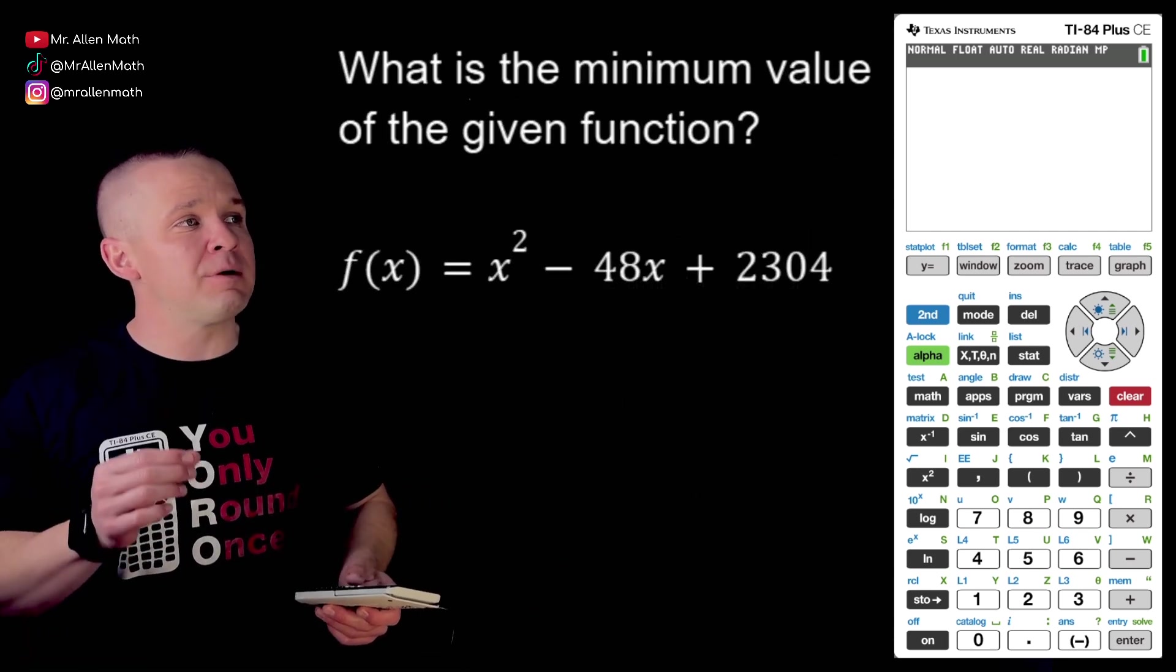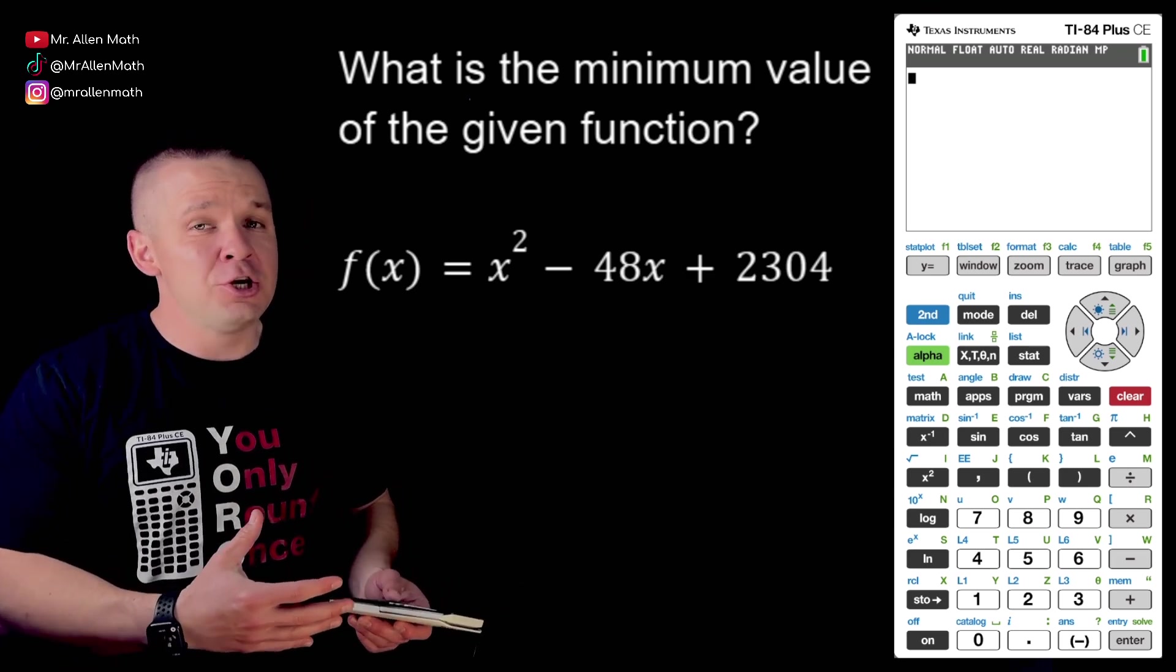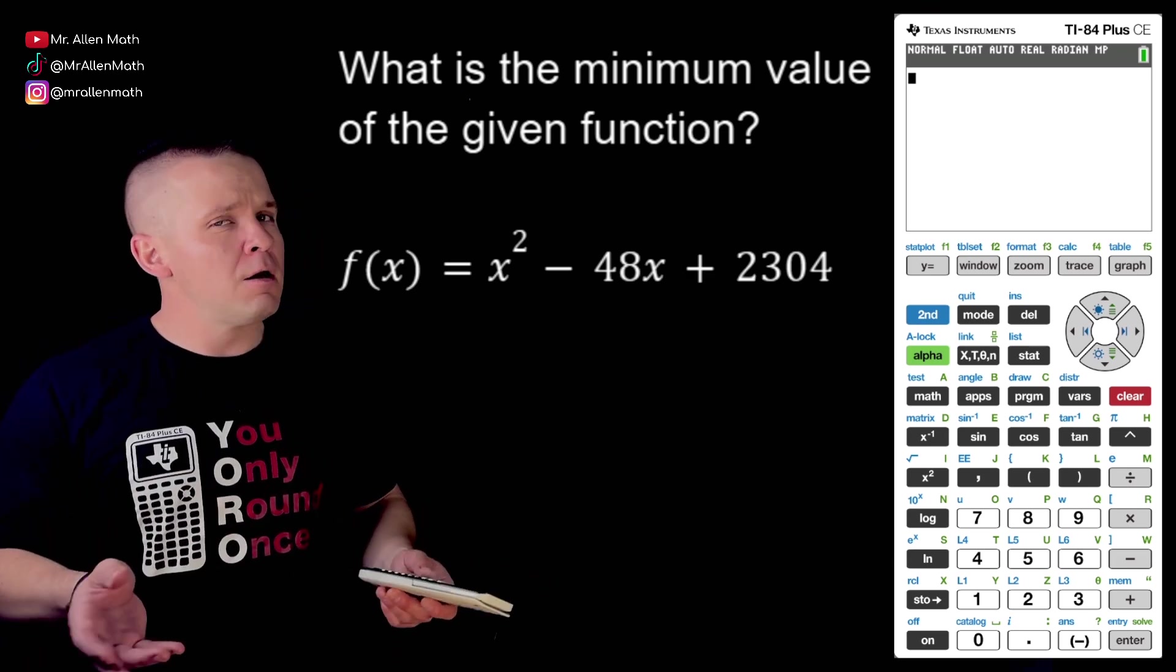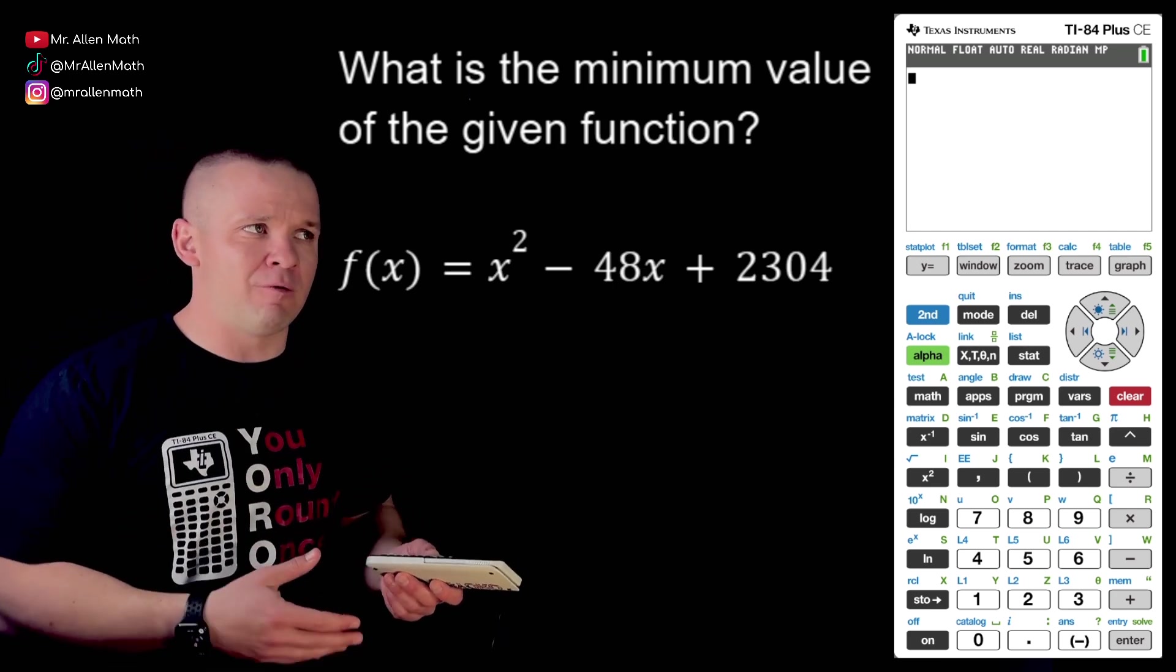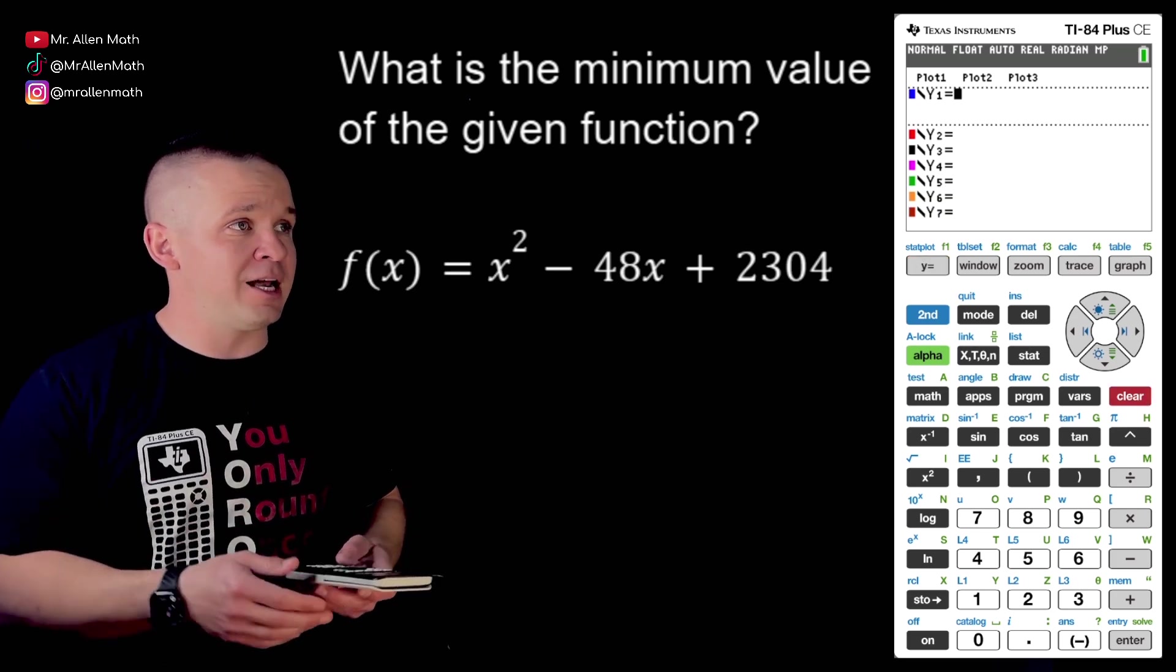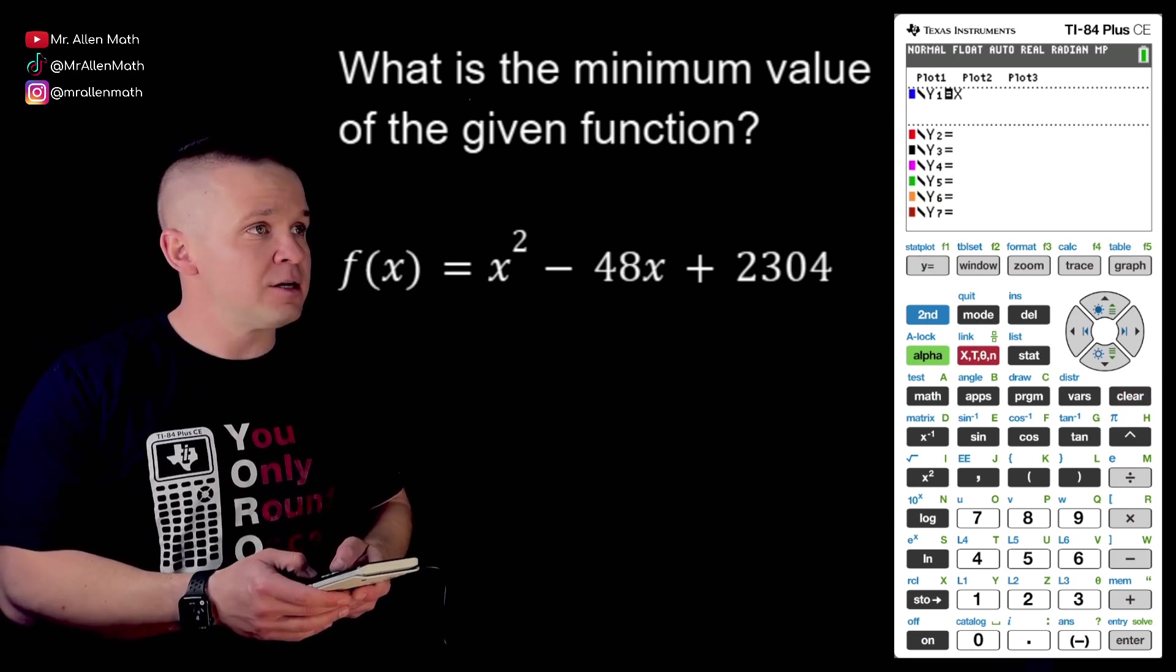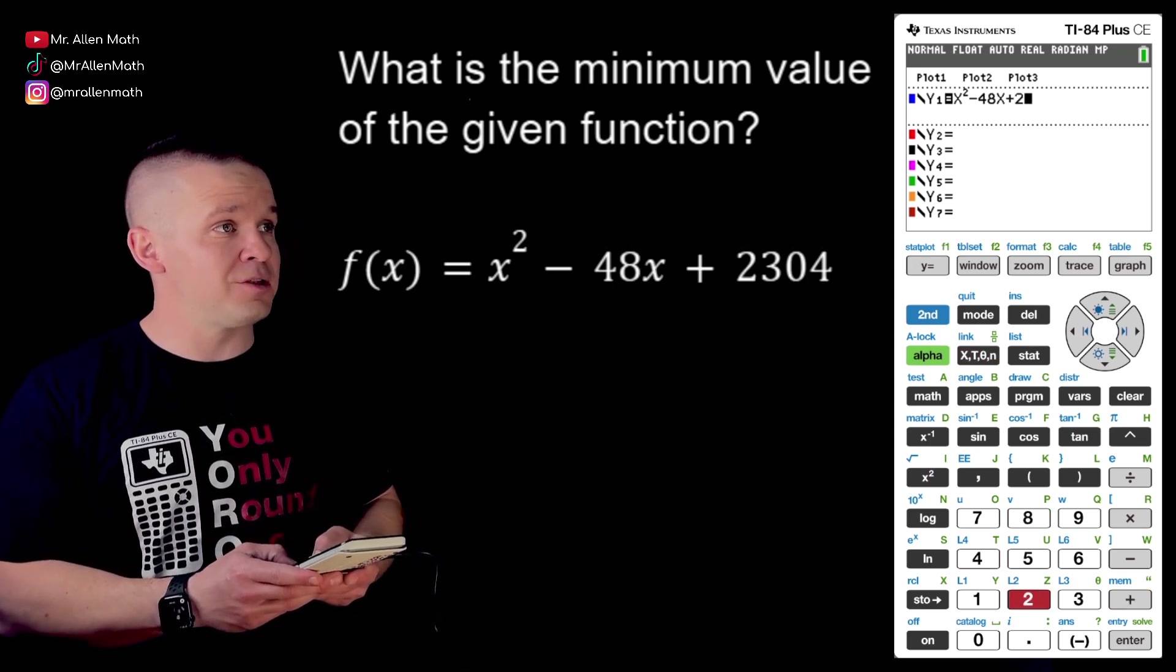I've got what is the minimum value of the given function. Now in another video I will show how to do this using an equation, x equals the opposite of b over 2a, but let's say you didn't remember how to get your axis of symmetry and then plug back in to get your minimum value - you could just graph it. So I'm going to hit y equals and I'm going to plug that in. Clear out whatever you got in there. I got x squared minus 48x plus 2,304.